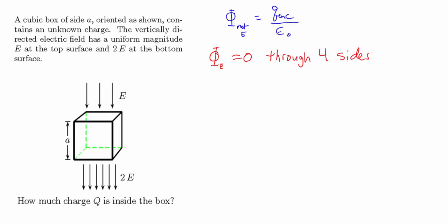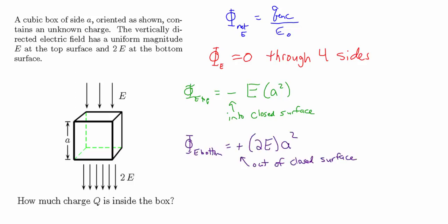There is negative flux in through the top and positive flux out through the bottom. Electric flux equals the electric field times the area when the field is perpendicular to the surface. Through the top, the negative electric flux is E times A squared, so the flux is −EA². Through the bottom, the flux is positive and the electric field strength is 2E, times the area A squared, giving a flux of +2EA².